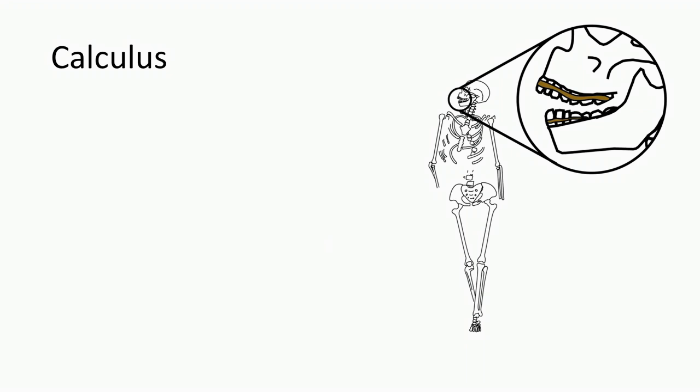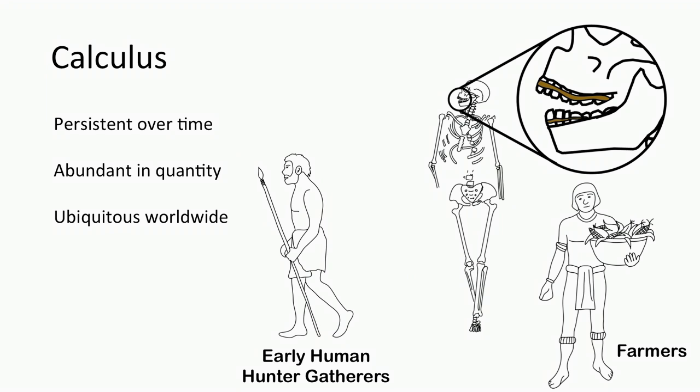And what's really important about dental calculus is that it fossilizes just like the rest of the skeleton. It's abundant in quantity before the present day, and it's ubiquitous worldwide. We find it in every population around the world at all time periods, going back tens of thousands of years. And we even find it in Neanderthals and animals.